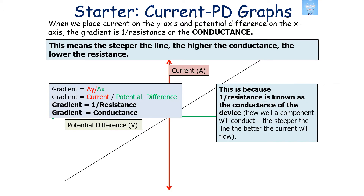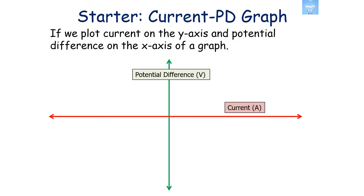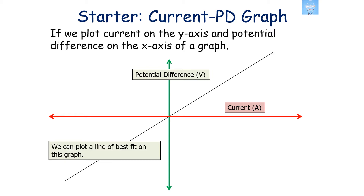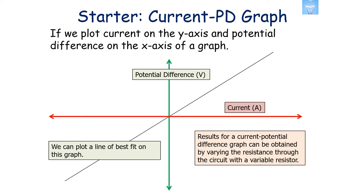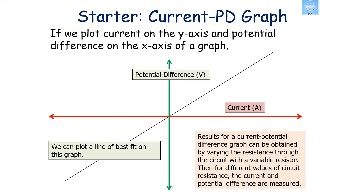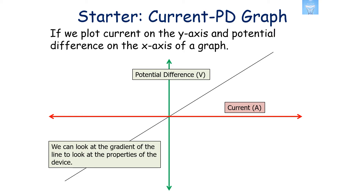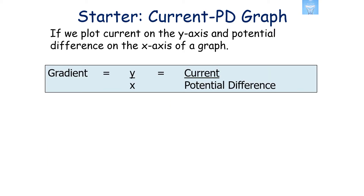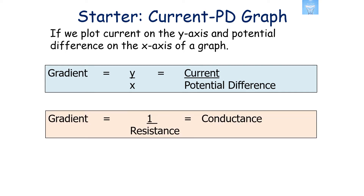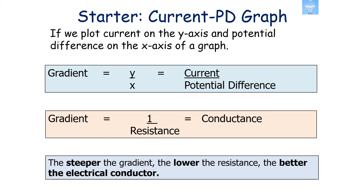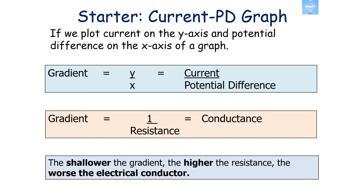This is an important idea because it tells you how well current will flow through the material. Results for a current potential difference graph are obtained by varying the resistance through the circuit with a variable resistor. For different values of circuit resistance, the current and potential difference are measured and plotted on the graph. The steeper the gradient, the lower the resistance and the better the electrical conductor; the shallower the gradient, the higher the resistance and the worse the conductor.